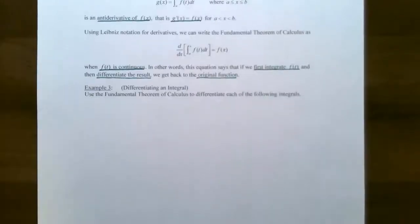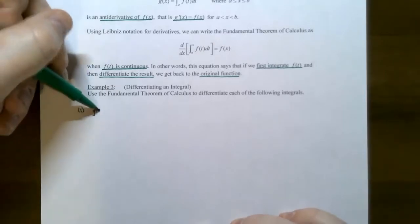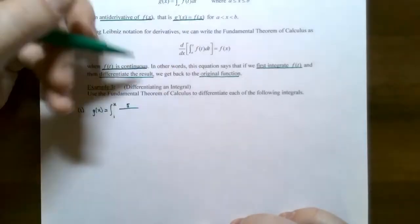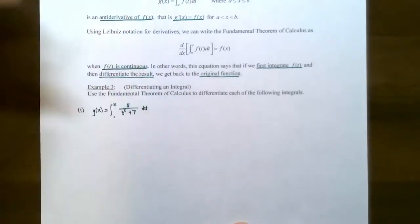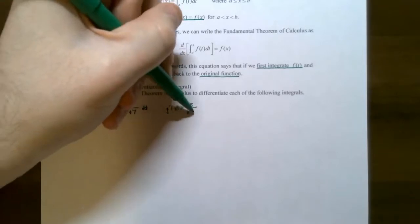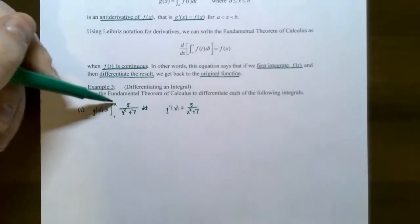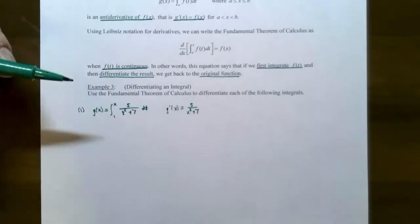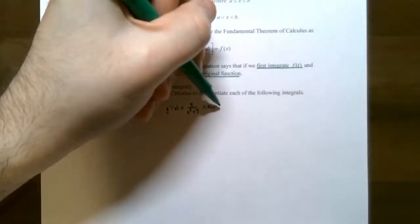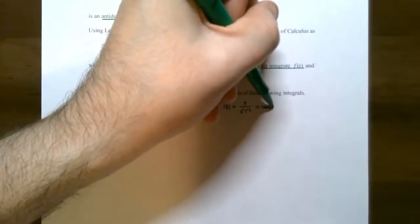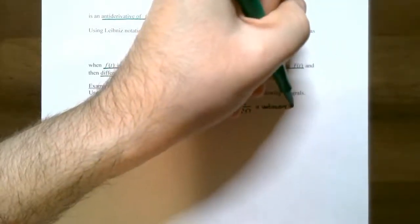Let's try Example 3: use the Fundamental Theorem of Calculus to differentiate each of the following integrals. Number one: g of x is the integral from one to x of five divided by t squared plus seven, dt. The derivative g prime is simply five divided by x squared plus seven — the integrand evaluated at the upper limit of integration x. The lower limit of integration doesn't matter because it becomes a constant when differentiated.